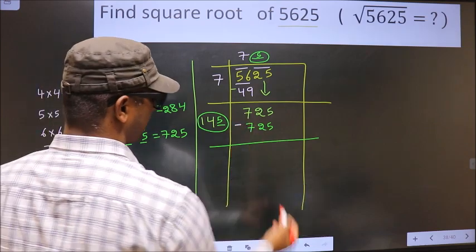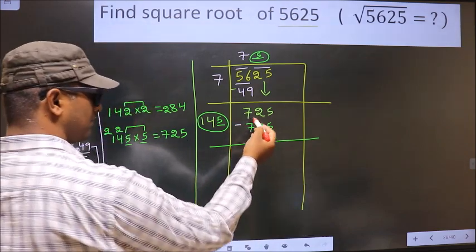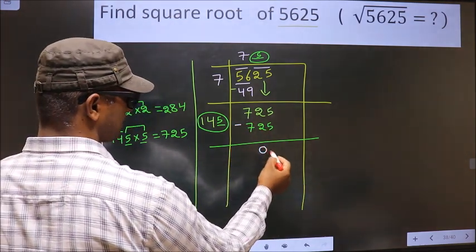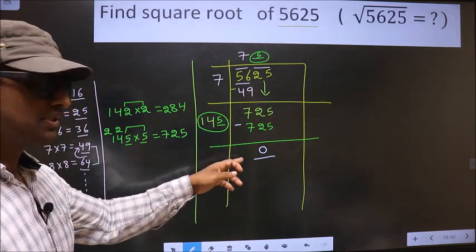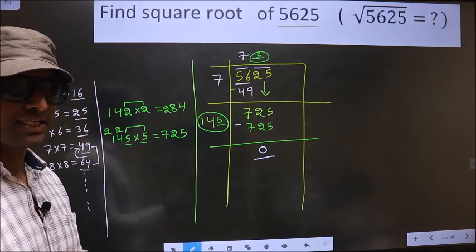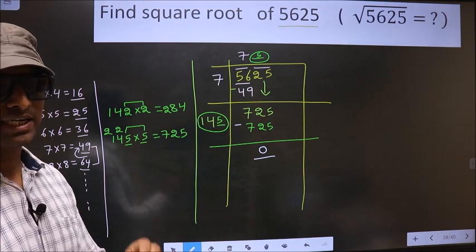So now you subtract. 725 minus 725 is 0. We got 0 here. That means the given number is a perfect square.